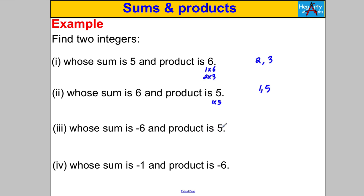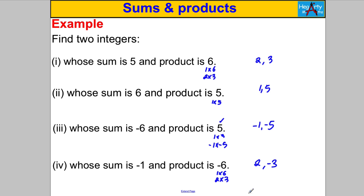For a sum of negative 6 and product of 5: we know 1×5 gives a product of 5, but we want a sum of negative 6. So negative 1 multiplied by negative 5 is positive 5, and negative 1 add negative 5 gives the sum negative 6. So the numbers are negative 1 and negative 5. Last one: sum of negative 1 and product of negative 6. Factors of 6 are 1 and 6, and 2 and 3. We need one positive and one negative. Positive 2 and negative 3 works: 2×(−3)=−6, and 2+(−3)=−1.